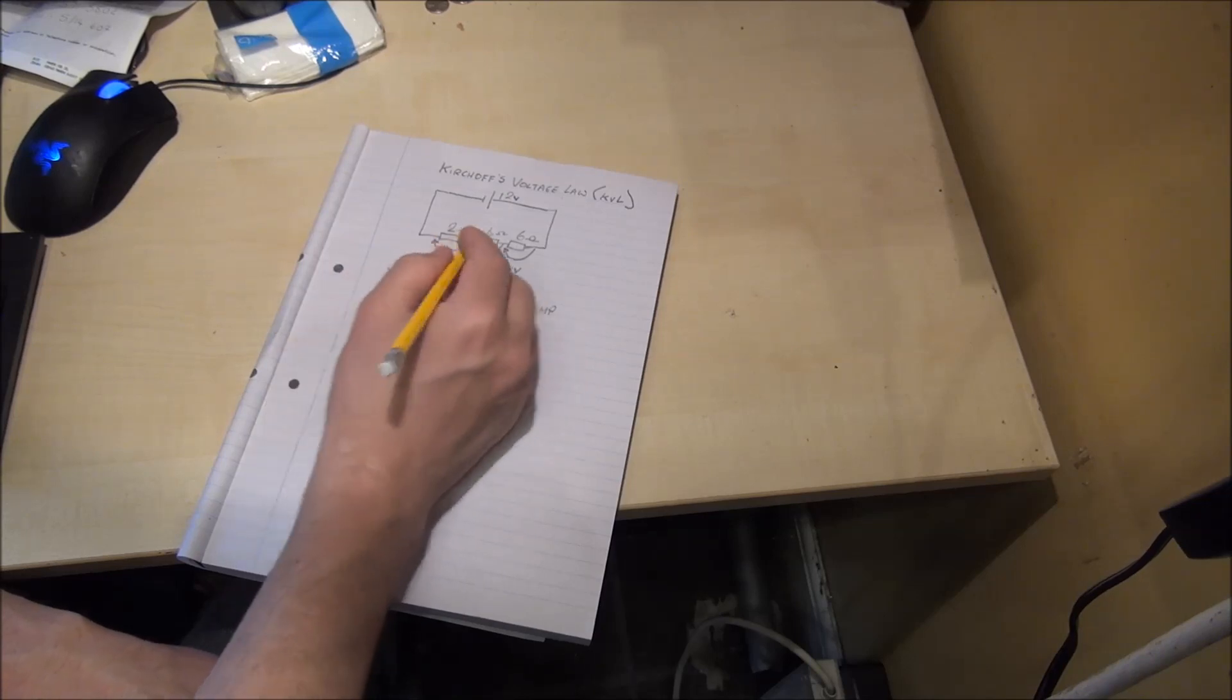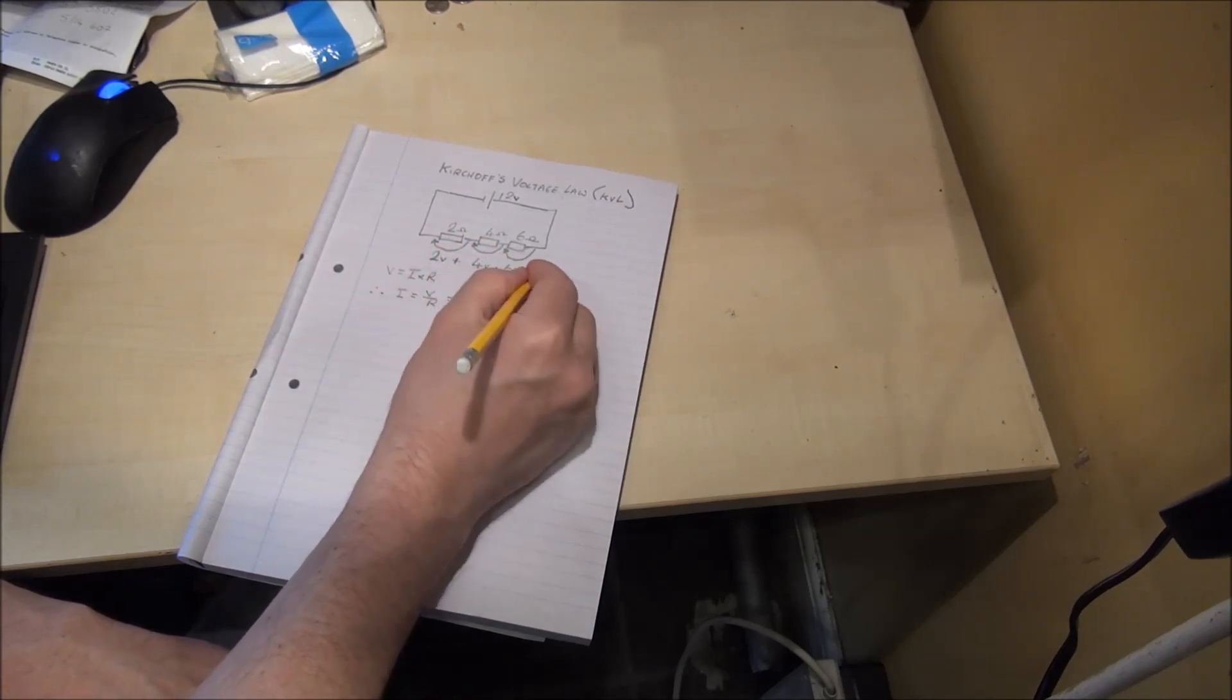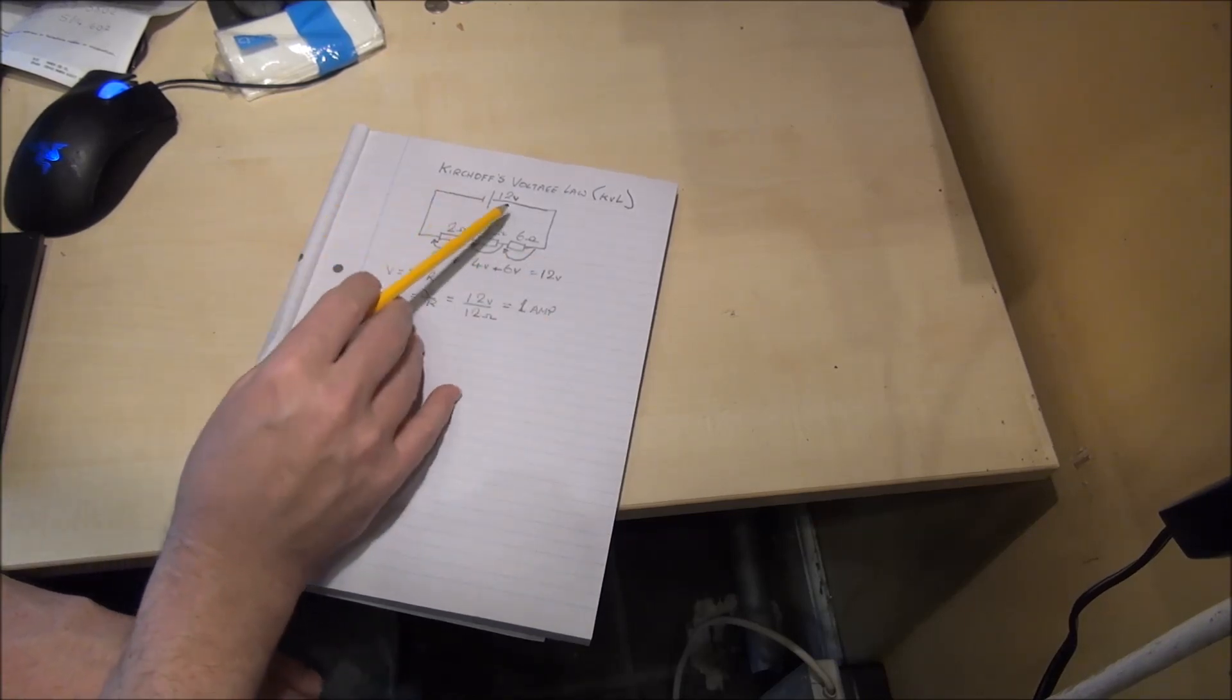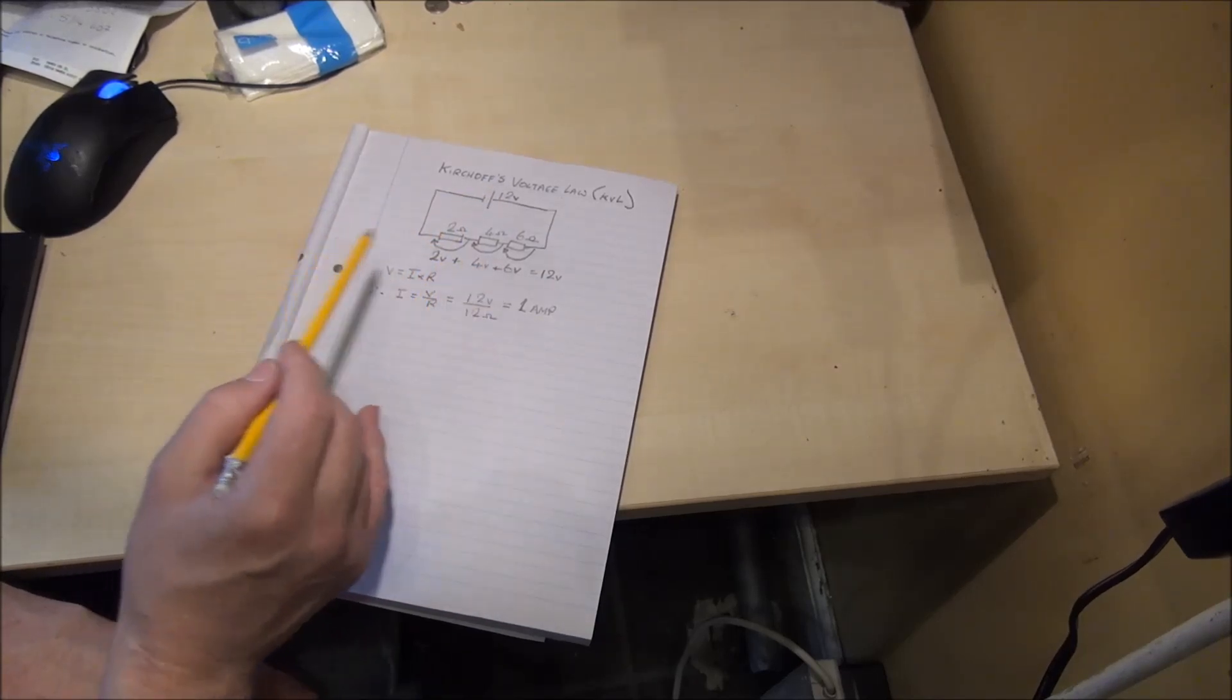so we've got three voltage drops here, will always equal the applied voltage. We have an applied voltage of 12 volts and the voltage drops, 2 volts, 4 volts and 6 volts is equal to 12 volts.